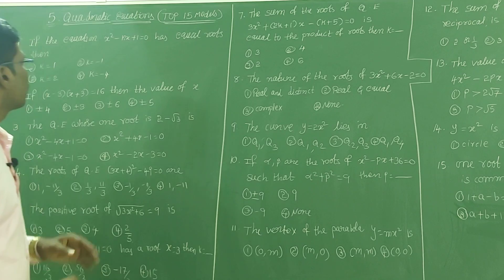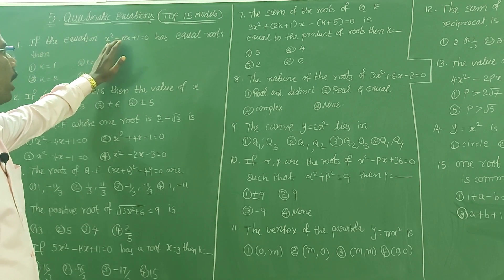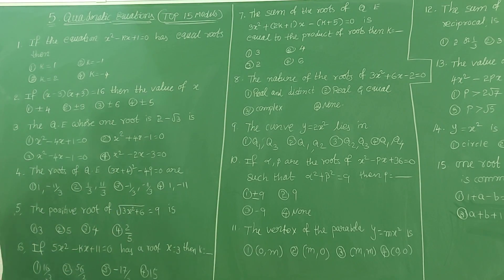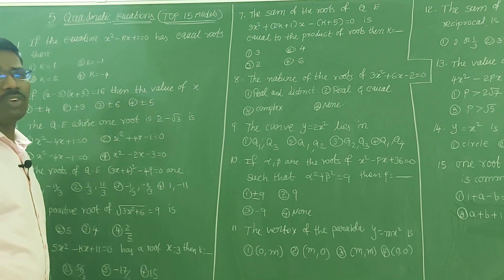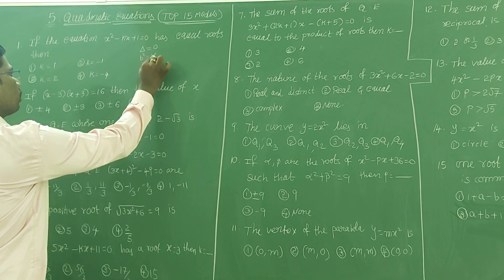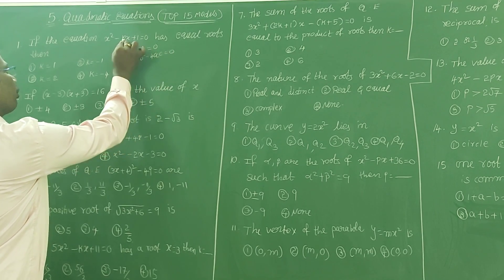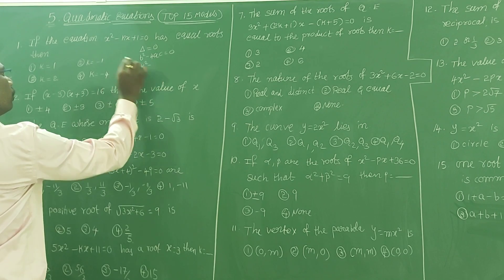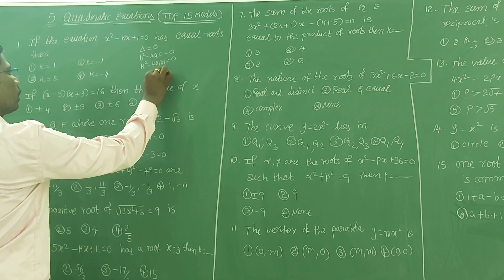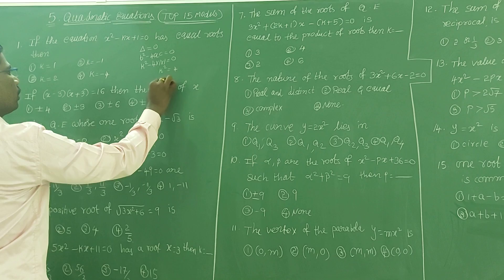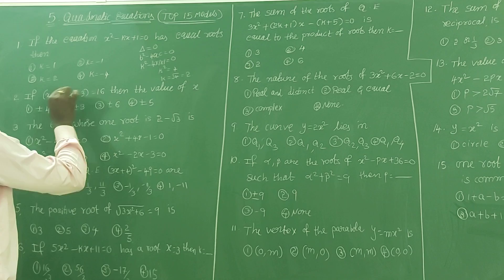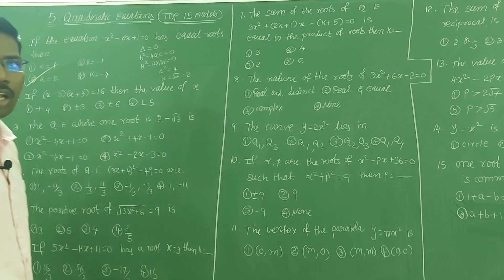If the equation x² - kx + 1 = 0 has equal roots, what is the condition? If the roots are equal, then discriminant is 0, meaning b² - 4ac = 0. Here b means k, so k² - 4×1×1 = 0. Therefore k² = 4 and k = √4 = 2. So k = 2, that is the third option.